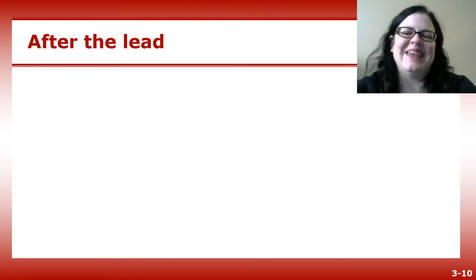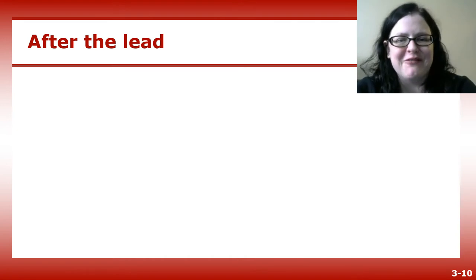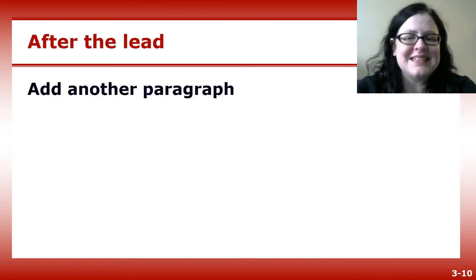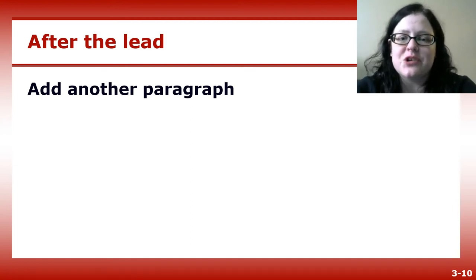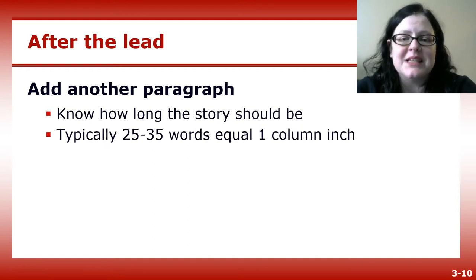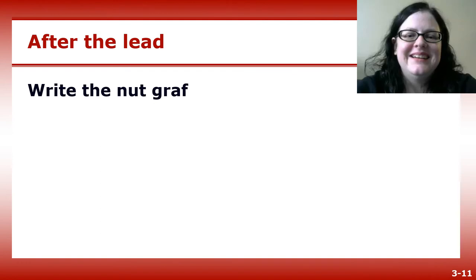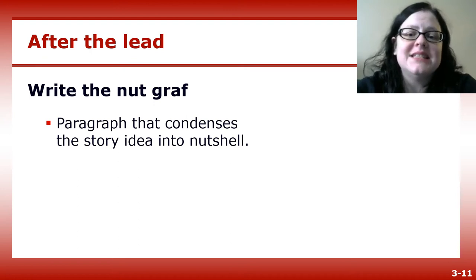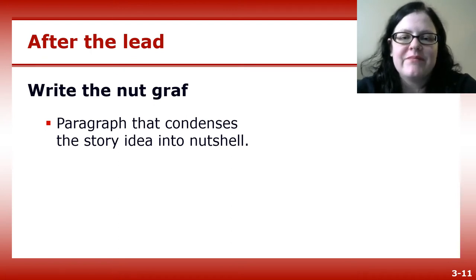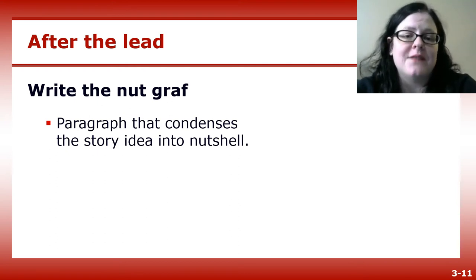Congratulations, you've written your lead. What now? Another paragraph, of course. Your editor or instructor will tell you how long your story should be. Newspaper stories are measured in column inches — typically there are 25 to 35 words per column inch. After the lead is what's called a nut graph: a paragraph that condenses the story in a nutshell. It contains the reasons for writing the story and why readers should care. It's typically within the first six paragraphs.